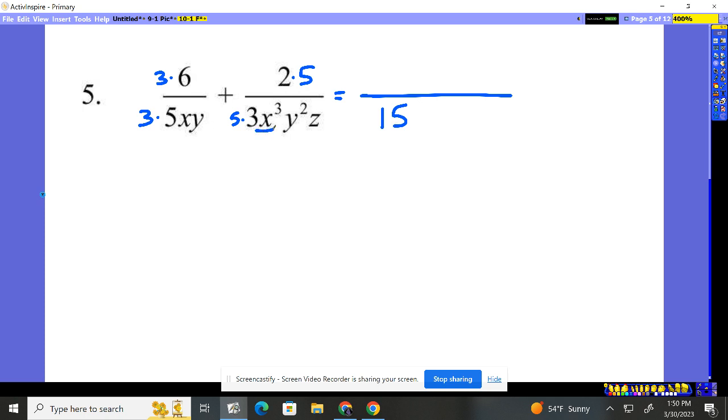Now what about the x's? He's got x to the third, he's got an x. We can make everybody become x to the third. He's already got that, so nothing there. But what am I going to multiply this one by to make it x to the third? An x squared. So multiply the top by x squared also. That gives us our x to the third.